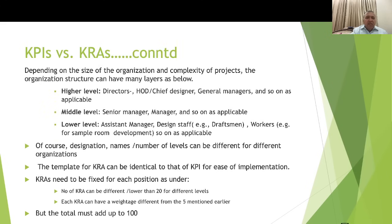Depending on organization size and project complexity, layers may include higher levels such as directors, HODs, chief designers, and general managers; middle levels such as senior managers and managers; and lower levels such as assistant managers, design staff, draftsmen, and workers for sample room development. Designations vary across organizations. The KRA template can be identical to the KPI template for ease of implementation. The number of KRAs can be fewer than 20 for different levels, and each KRA can carry a different weightage, but the total must still add up to 100.